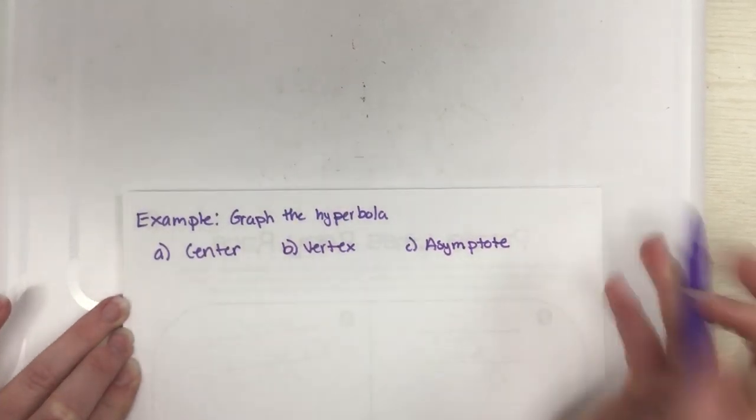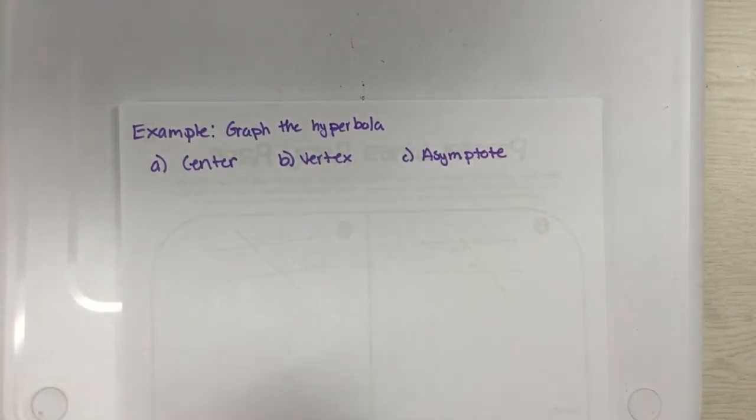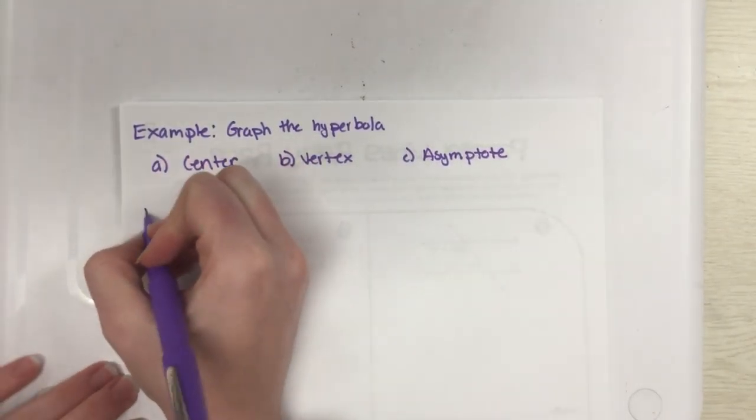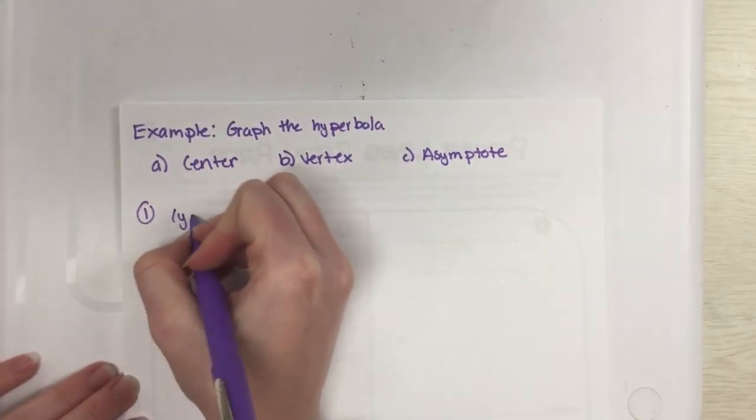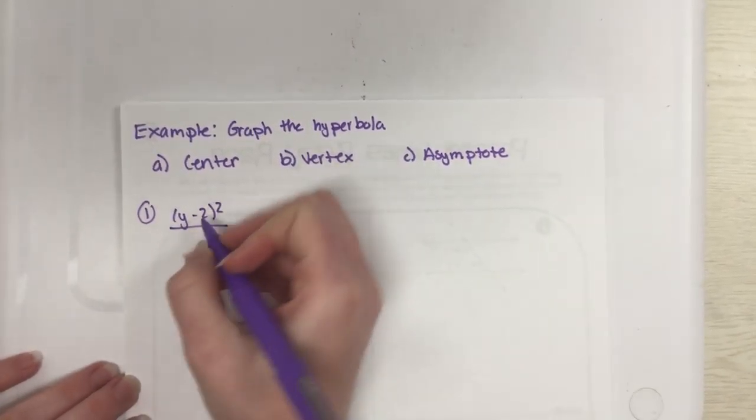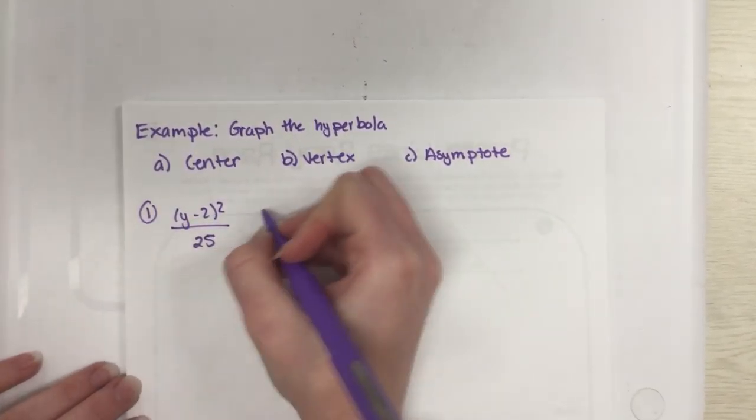We're going to graph the hyperbola. When you're doing this you need three things and it has to be in this order: you need a center, you need a vertex, and you need an asymptote.